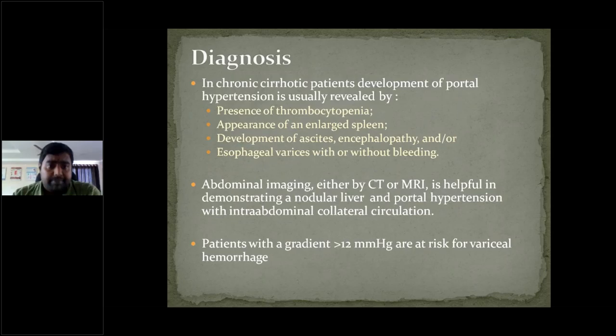To diagnose portal hypertension in chronic cirrhotic patients, the first indications are thrombocytopenia or appearance of an enlarged spleen. If there is only an enlarged spleen seen on routine abdominal examination without thrombocytopenia, ascites, encephalopathy, or varices, portal hypertension can still be suspected.